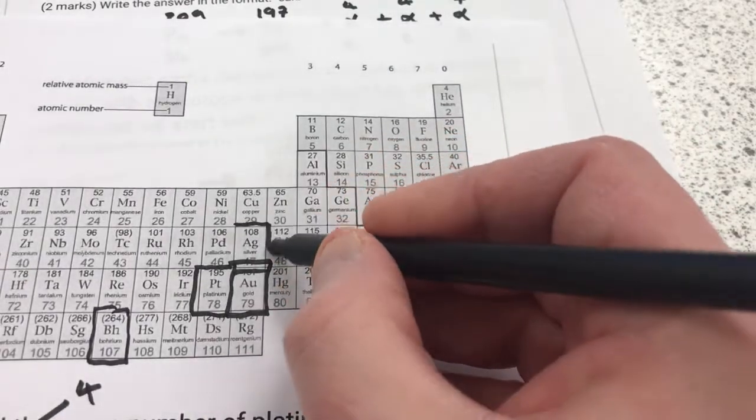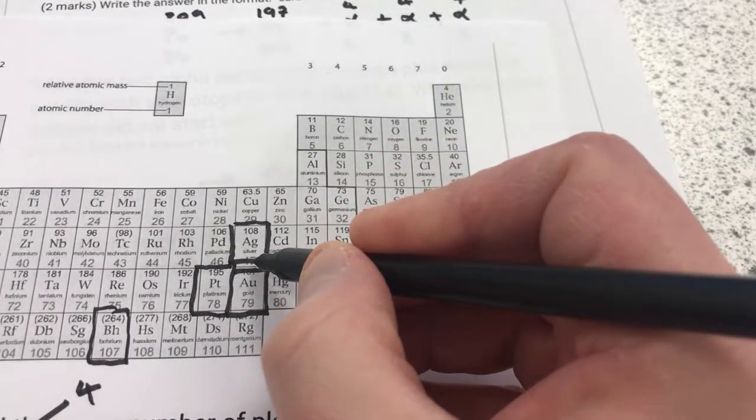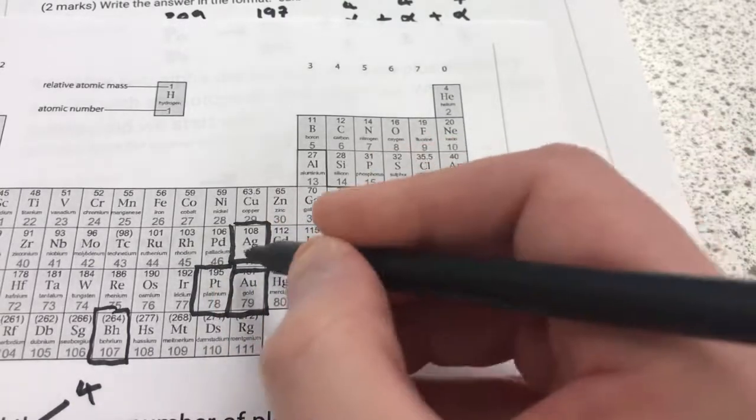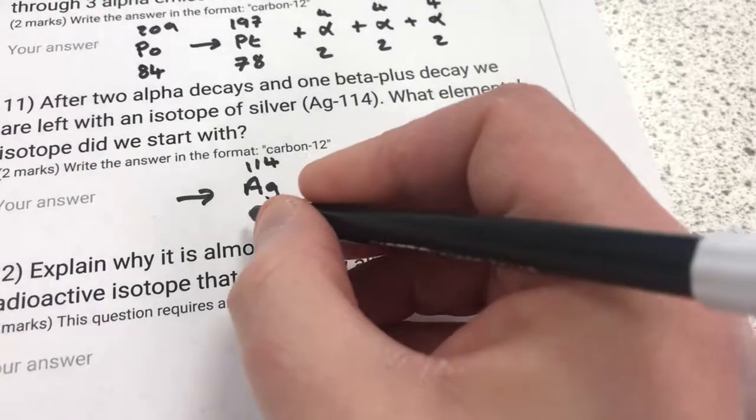Silver is here. Unfortunately in a previous question I've drawn through the number that I need, but they're in numerical order, so 45, 46, 47. 47 is the atomic number of silver.